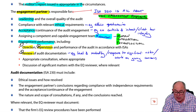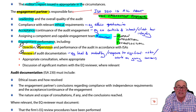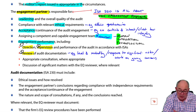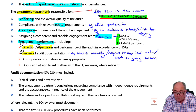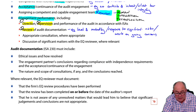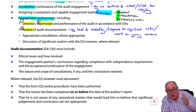The components all come back to the engagement partner: leadership, ethics — the ethics questionnaire — acceptance, making sure the client has integrity and there are no conflicts of interest with other clients, resources — human, intellectual, and technological — and performance: direction, supervision, and review.